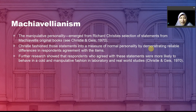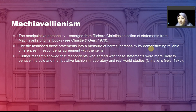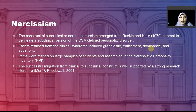Research gave evidence that those who agreed with statements from the Machiavellianism scale were more likely to behave in a cold and manipulative way, both in laboratory and real-world studies. This means the way psychologists measure this dimension is helpful for understanding real-world behavior.